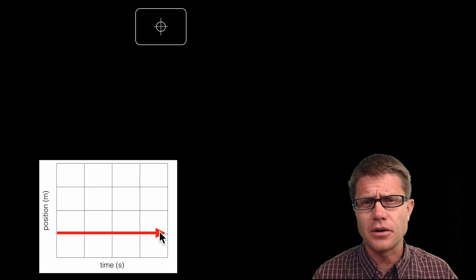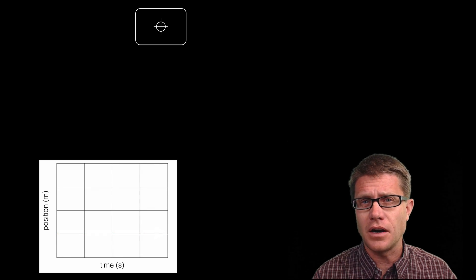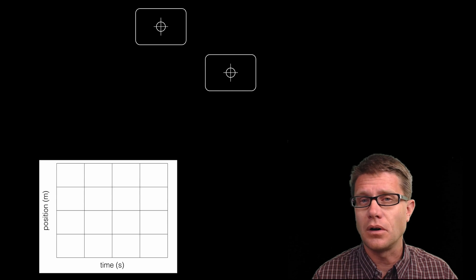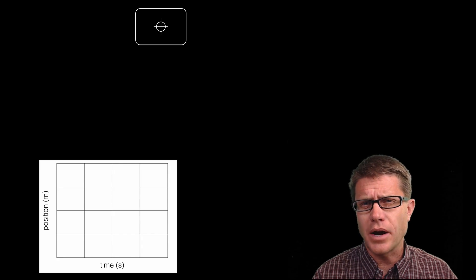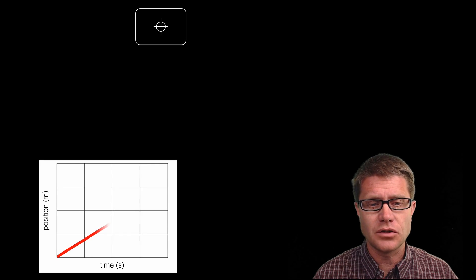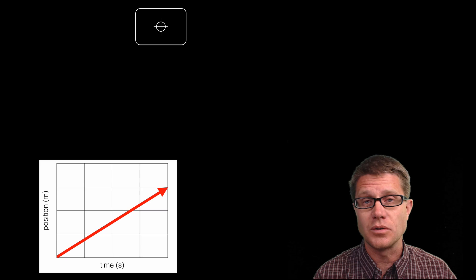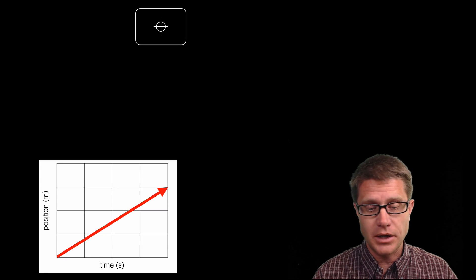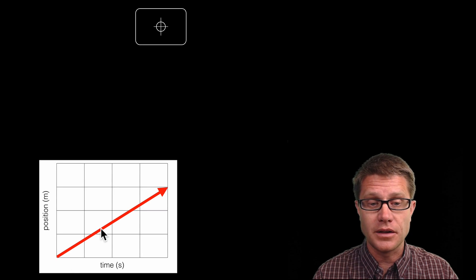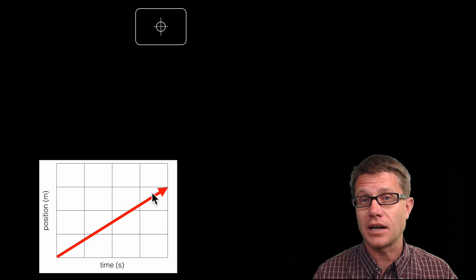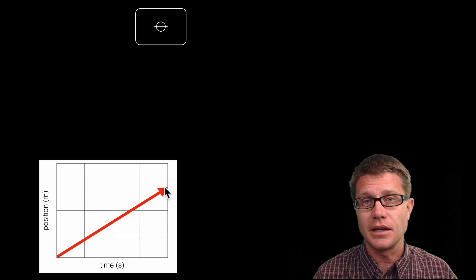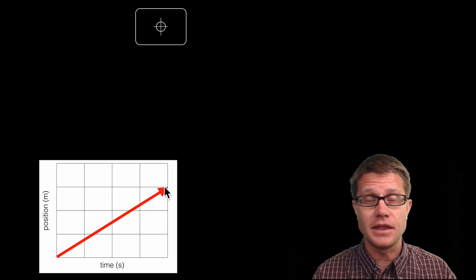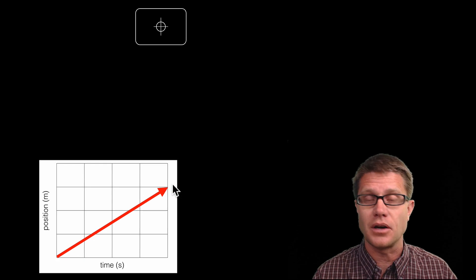Now let me show you another object that has constant velocity — it is always moving to the right at the same speed. What would the graph of that object look like? It is going to be a straight line with a positive slope, moving towards the right. At any point along this line it has the same exact velocity. We can measure the slope of this line and it tells us the velocity, which is constant throughout the whole time.